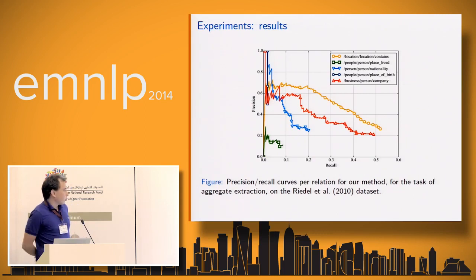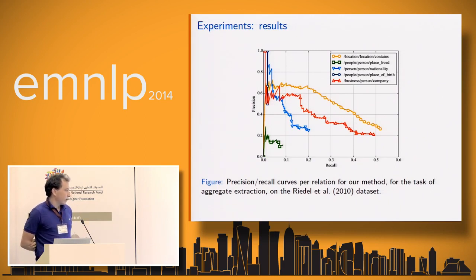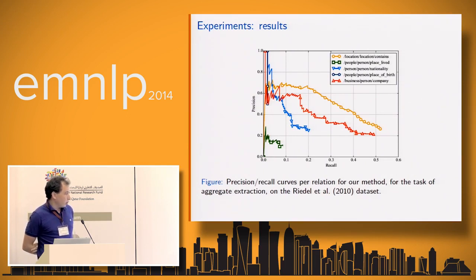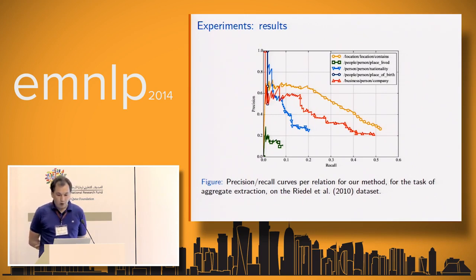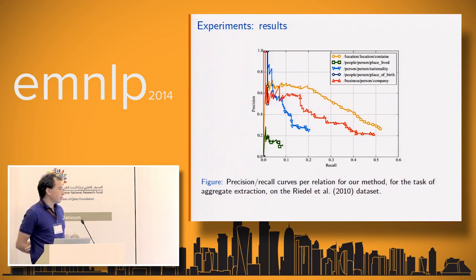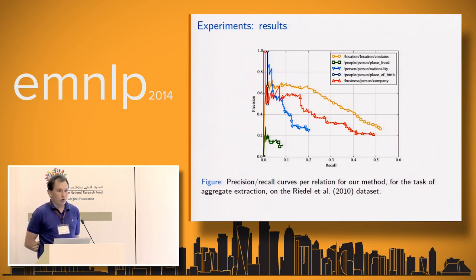We also show precision-recall curves for individual relations. The approach works well for relations such as location contained-by or person employed-by a company, but not for relations like place of birth, likely because that information is missing from the New York Times articles.